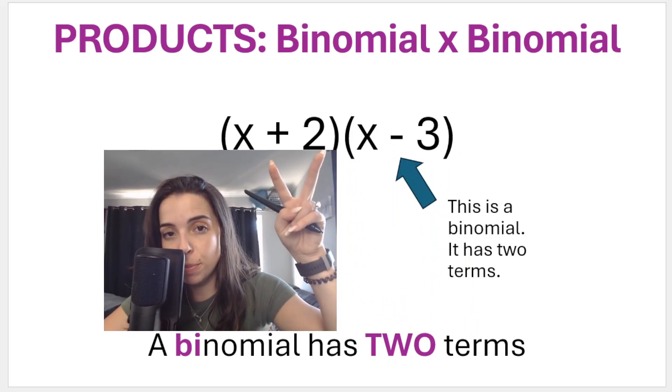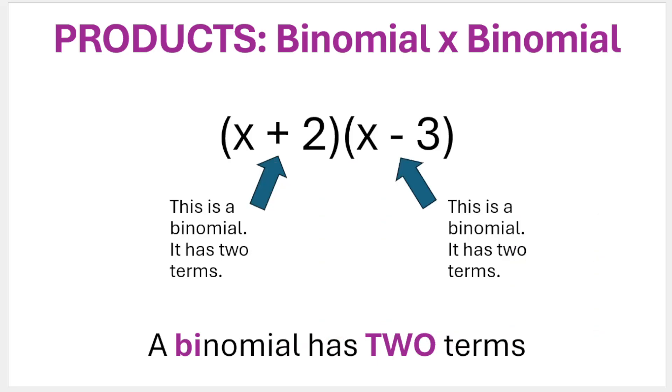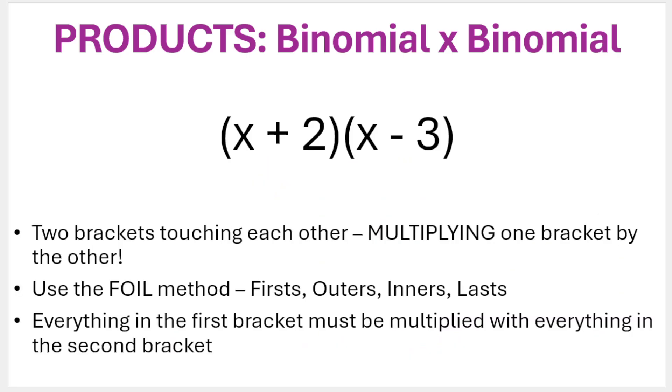So this is a binomial multiplied by a binomial. You'll recognize that you need to do binomial times binomial because the two brackets will be touching each other. It means that they are being multiplied by each other. We're multiplying the first bracket by the second and vice versa. Now some teachers teach this as using the FOIL method. First, outers, inners, last, which I'll explain now. But basically everything in the first bracket is being multiplied with everything in the second bracket.